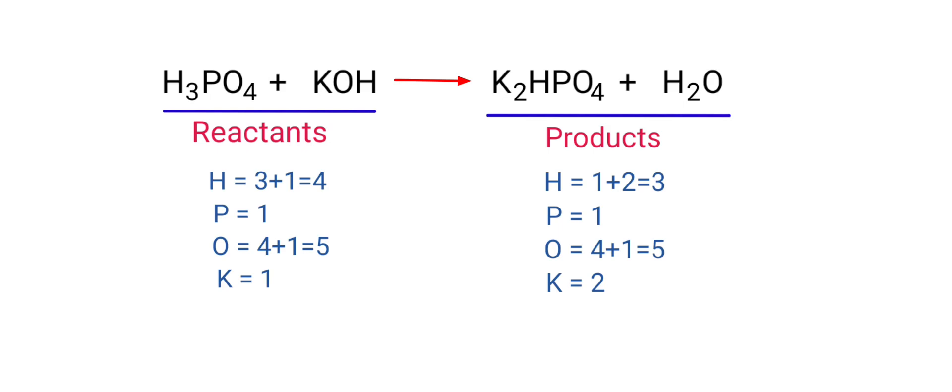The number of atoms are not balanced on both sides. To balance the chemical equation, we need to make use of coefficients. A coefficient is a number that we place in front of a chemical formula.